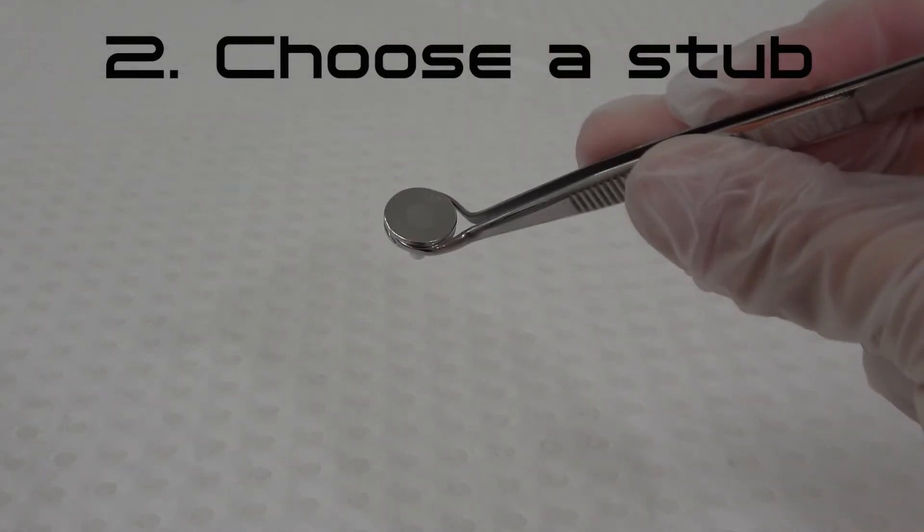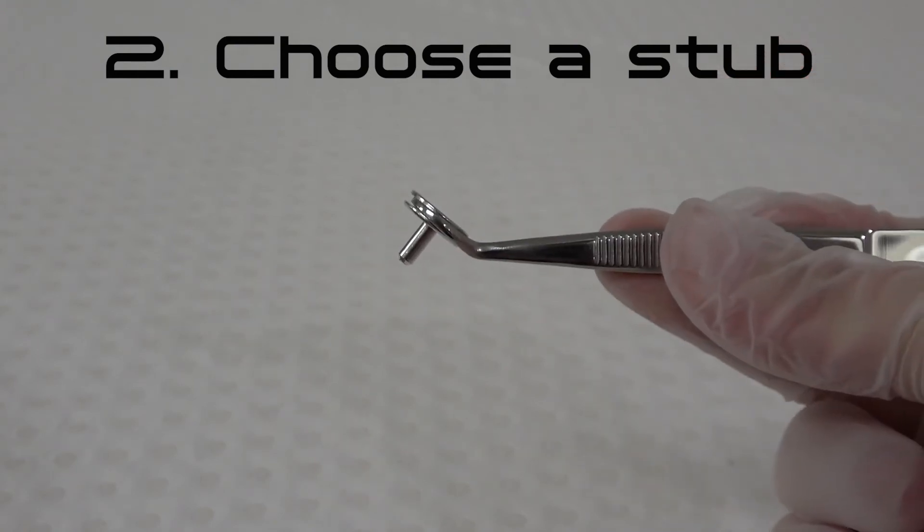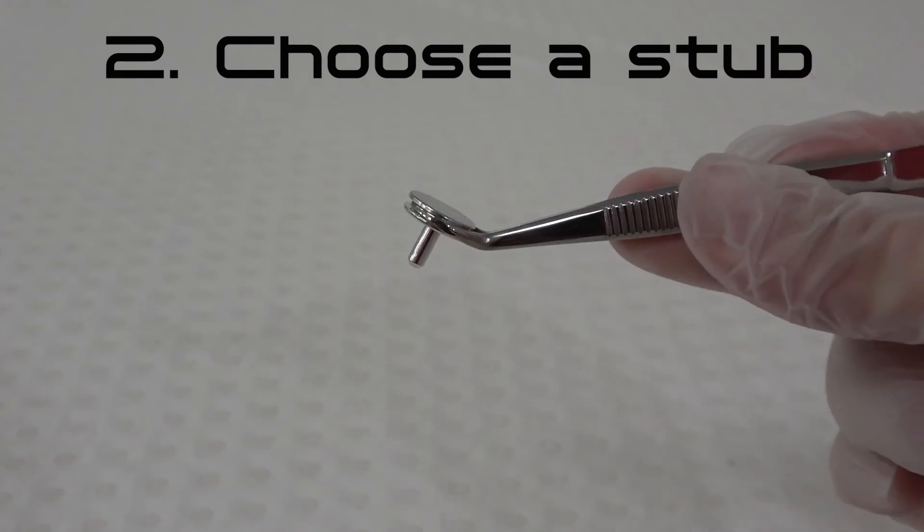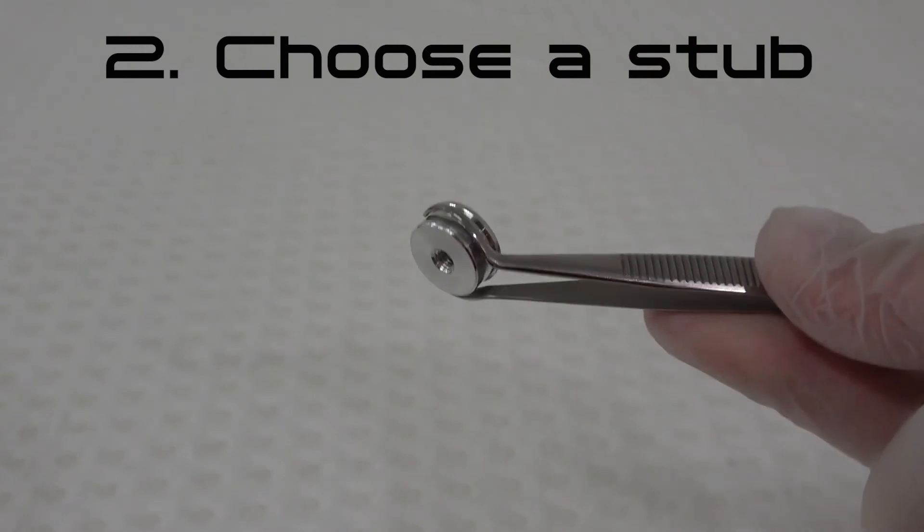Step 2. Choose a stub compatible with the SEM you will be using. Small SEM stubs available through the UNSW EMU currently include 12.6 mm pin stubs and 15 mm screw thread base stubs.